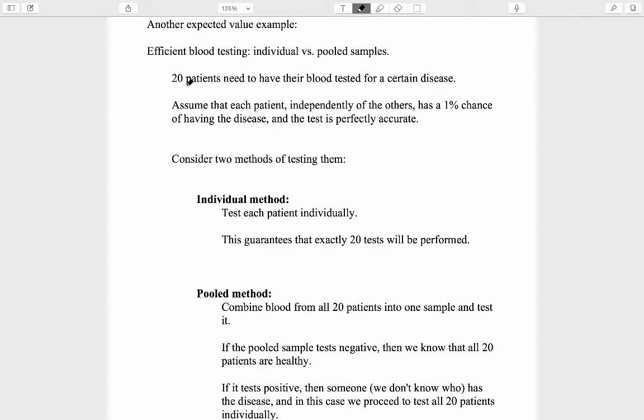The background is that 20 patients need to have their blood tested for a certain disease. We will assume that each patient, independently of the other patients, has a 1% chance of having the disease, and the test is perfectly accurate.